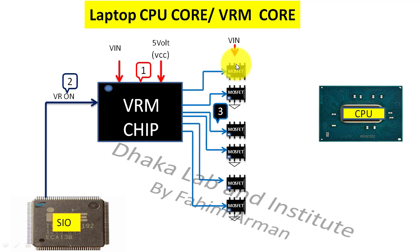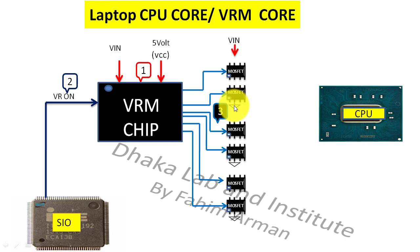As I told you, there will be VIN voltage in the main MOSFETs of all these phases. First this MOSFET will get VIN voltage, then from drain to source this voltage will pass, and then from source it will come to the second MOSFET. There will be ground to the source of the second MOSFETs. They will switch high and low, creating a phase, and this phase will create the CPU core voltage.